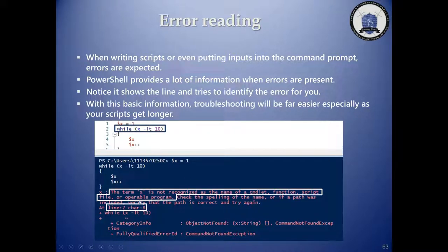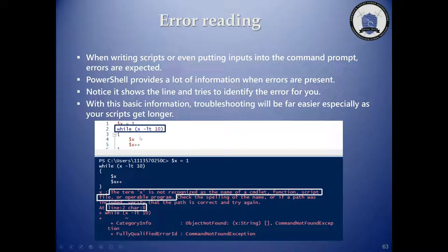Before even looking at the error message, notice the colors in the ISE version. The colors tell you a lot about how the code is going to run. For example, all variables are a certain color — in this case, they appear orange. But this variable right here is light blue, which tells you right off the bat that something is wrong. Let's run it and look at the error message.